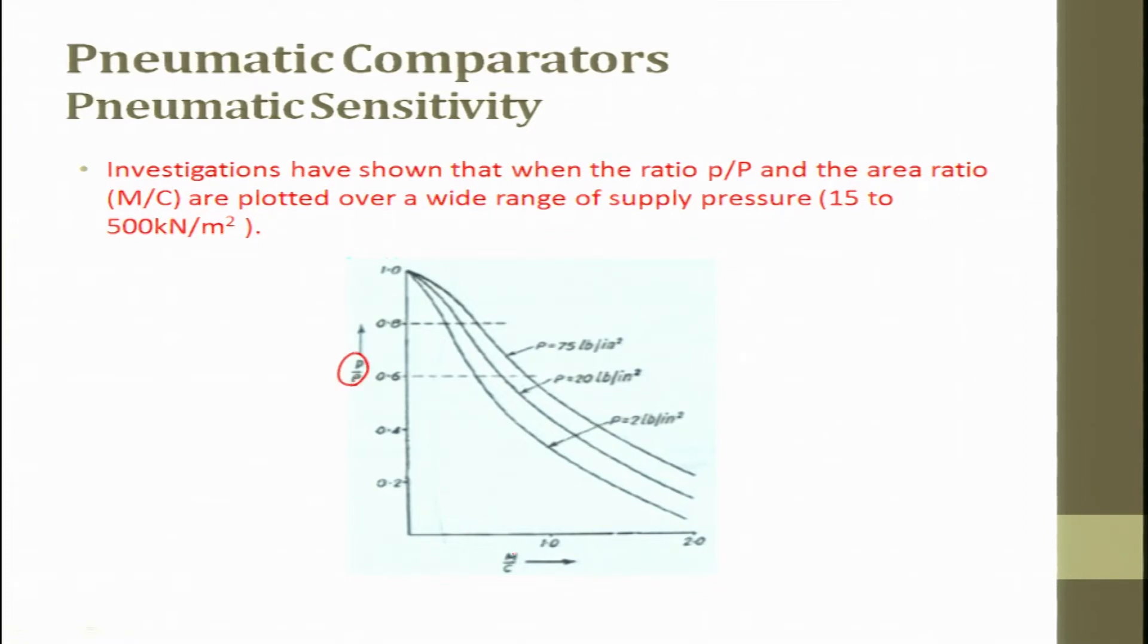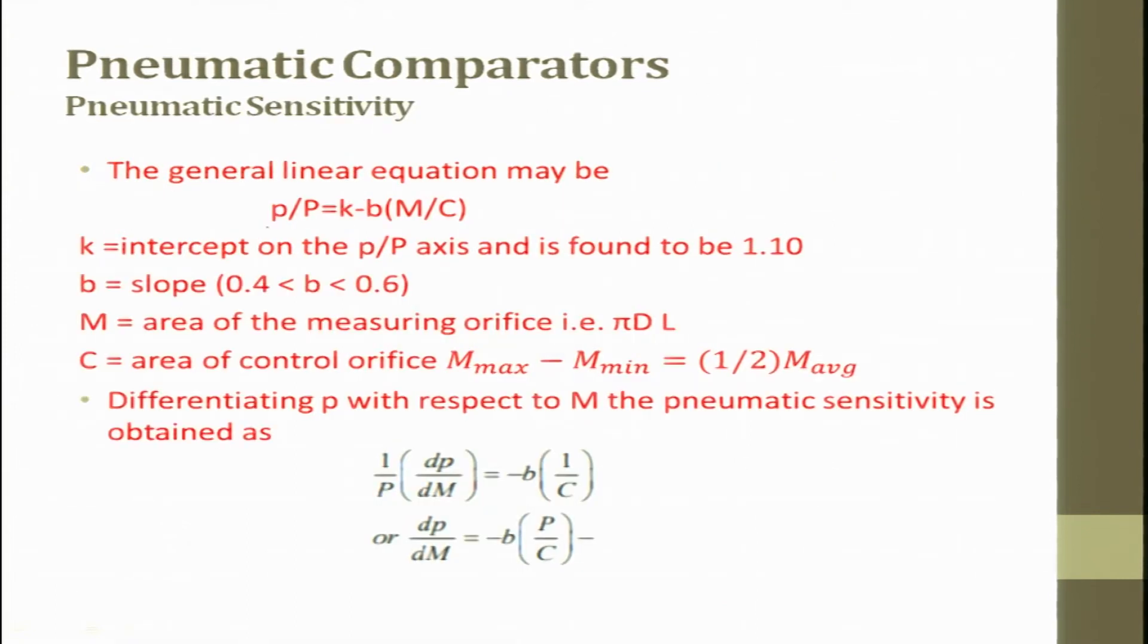The sensitivity of a pneumatic gauge can be brought like this. This is D P by P and this is M by C. There is a ratio. We try to put these two in ratios and then we try to take a linear range whichever is there and try to operate our device within that linear range. Investigations have shown that when the ratio P by P and the area ratio M by C are plotted over a wide range of supply pressures from 15 to 500 kilo Newton per meter square.